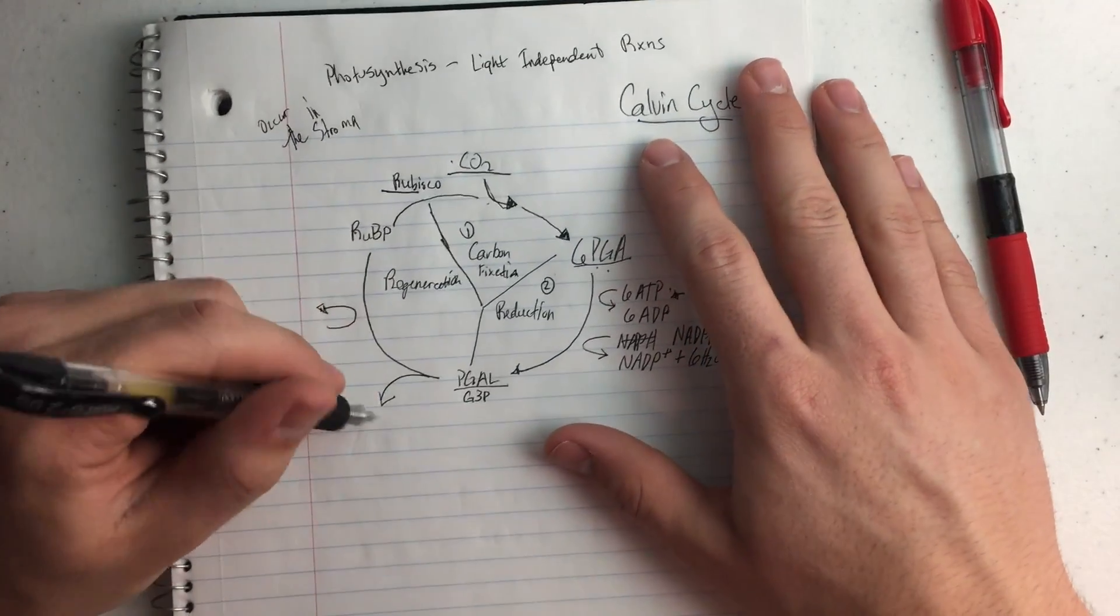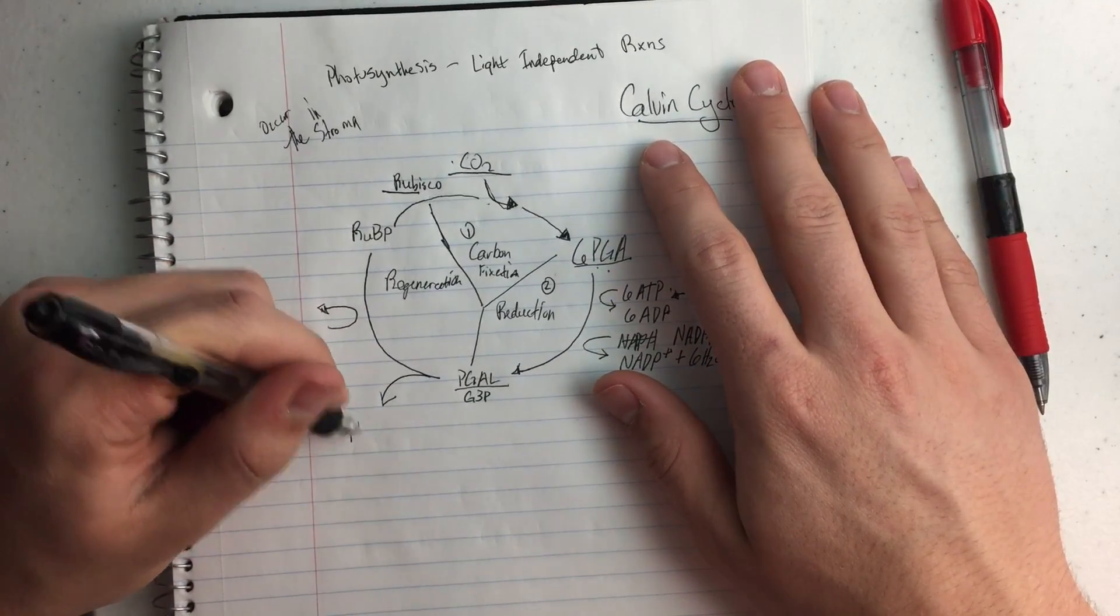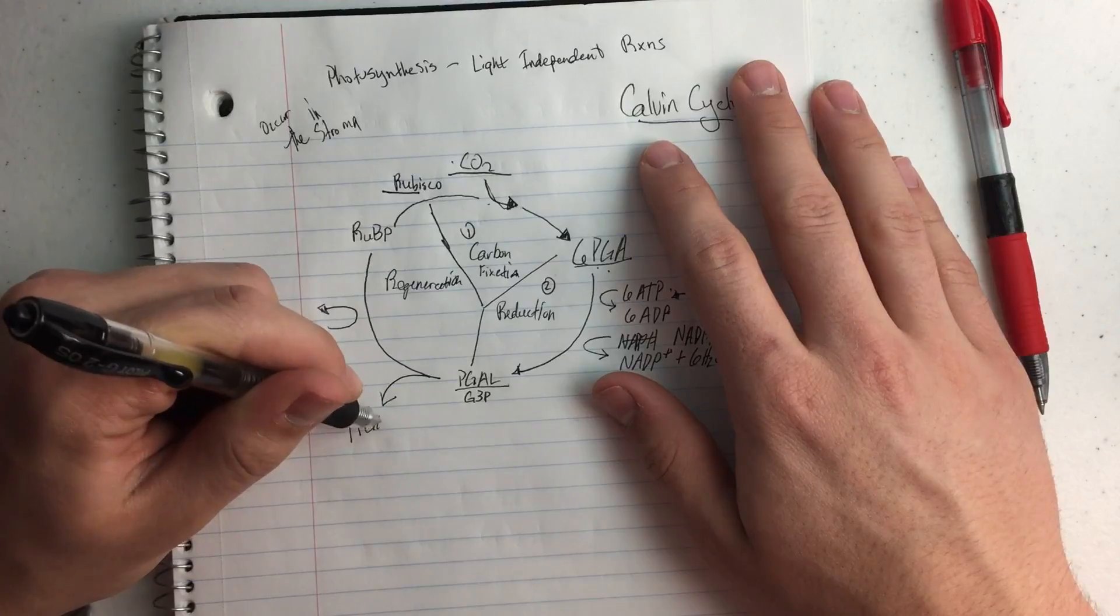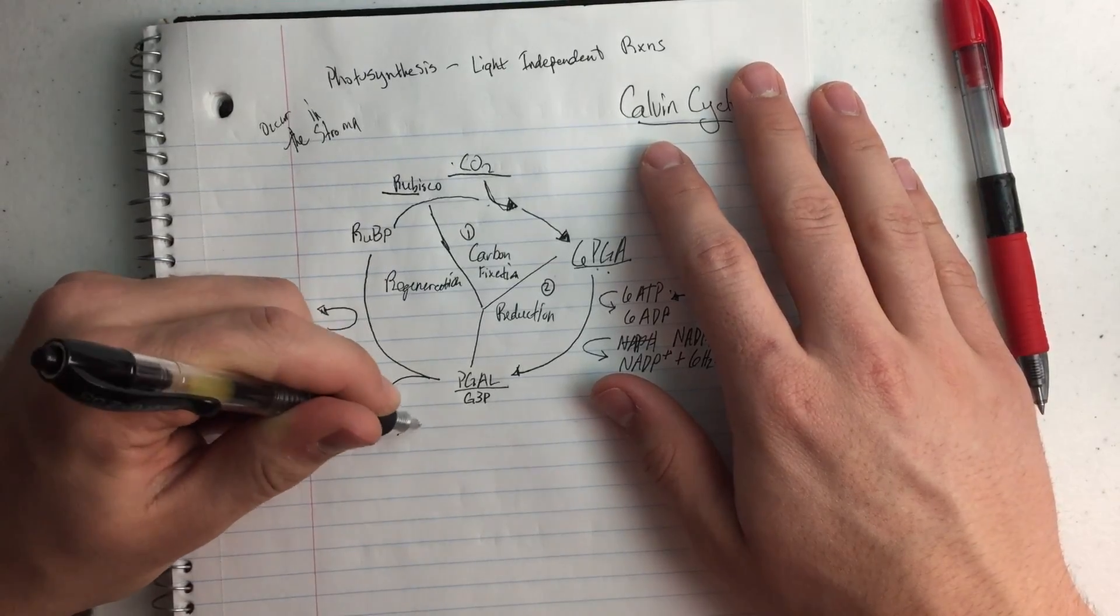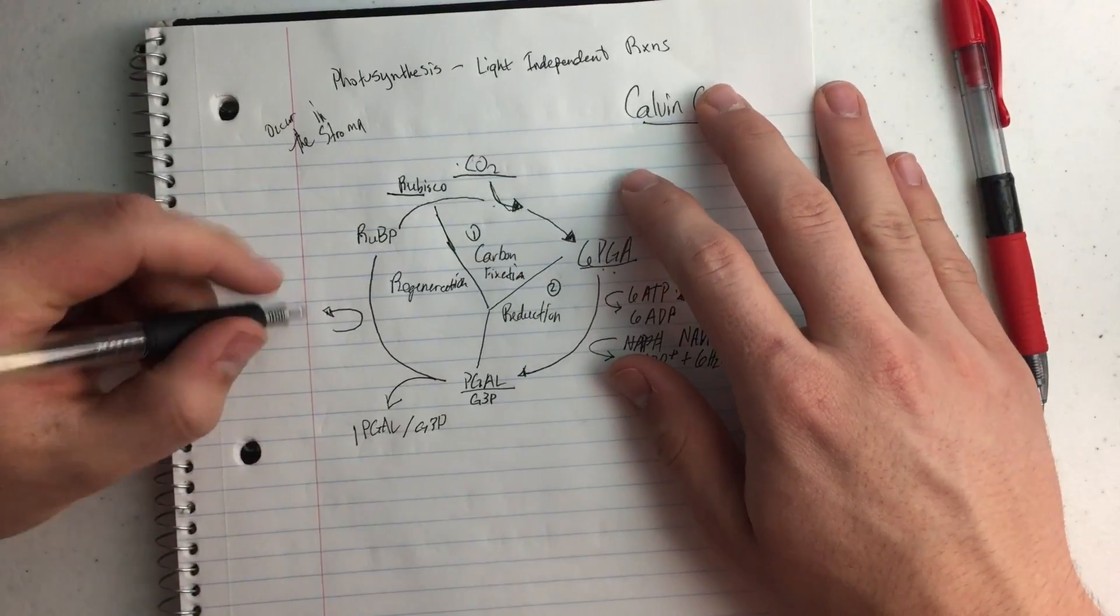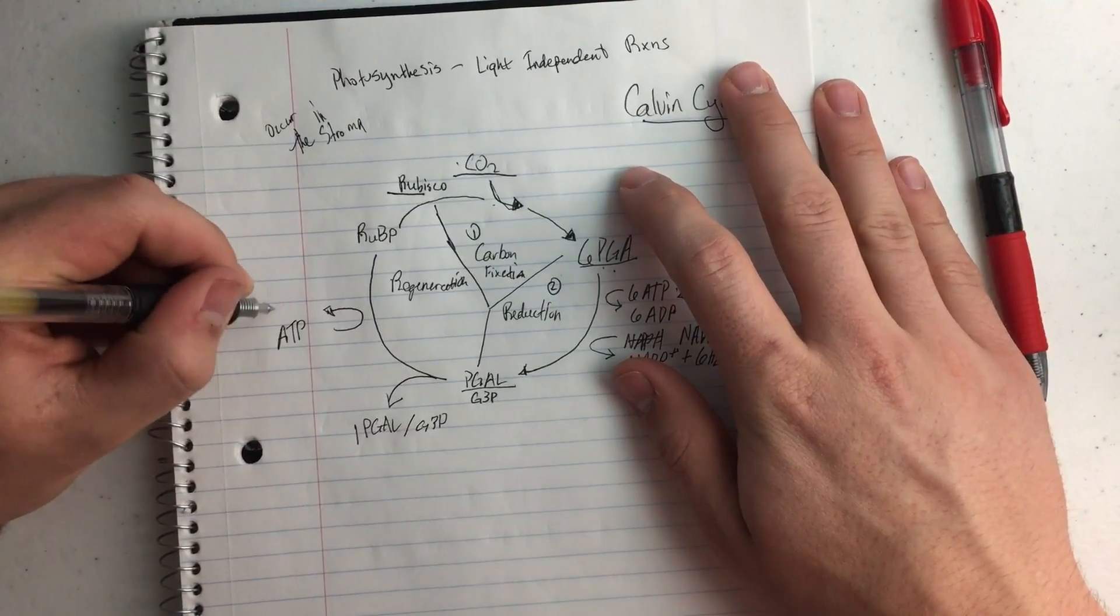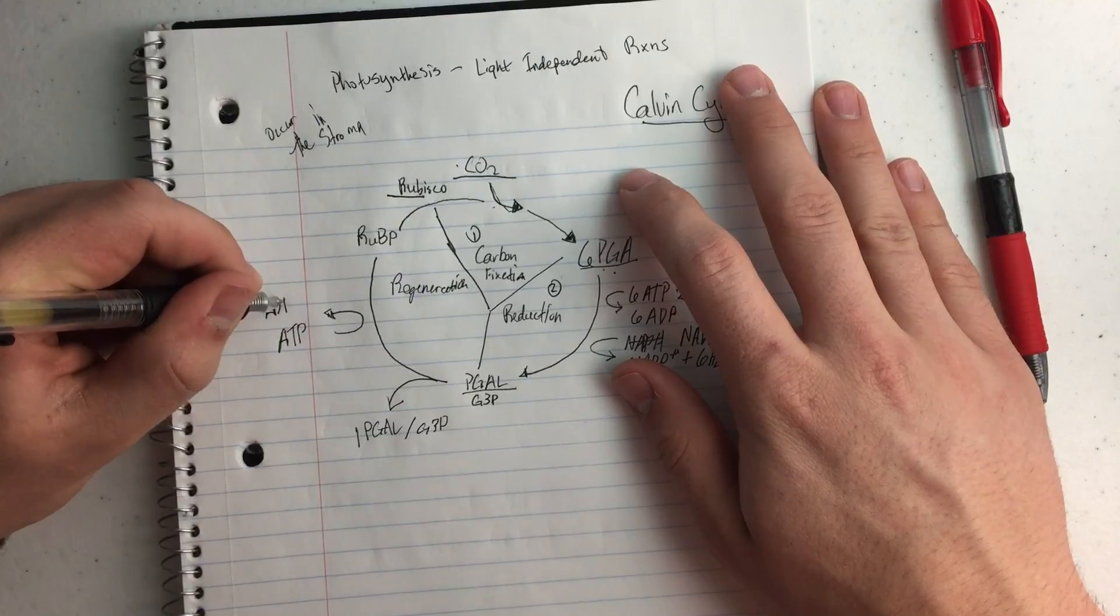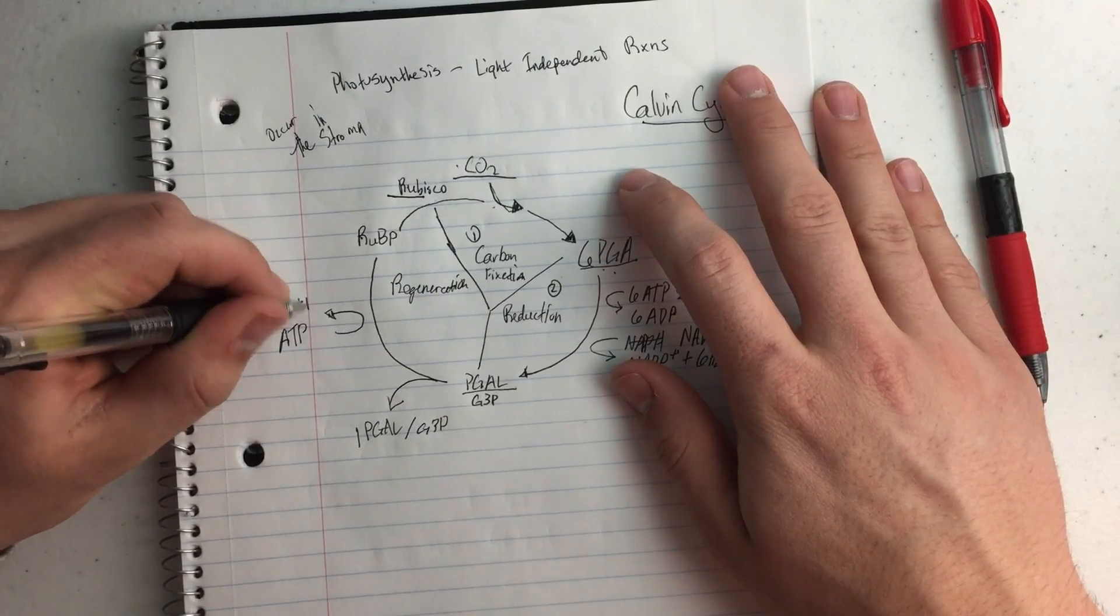And so then 1 PGAL is going to leave, 1 PGAL slash G3P is going to leave this cycle, and then we're going to put in some more ATP, and get out some more ADP and inorganic phosphates.